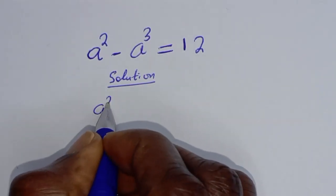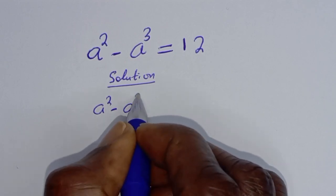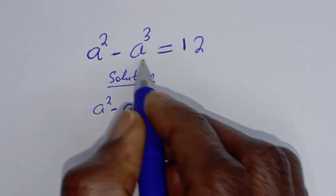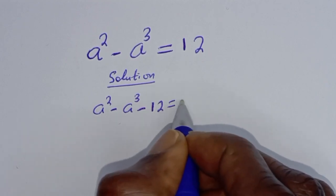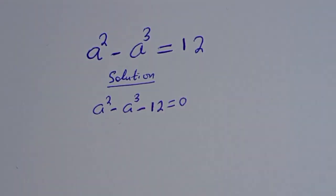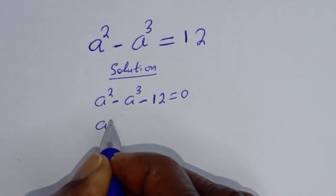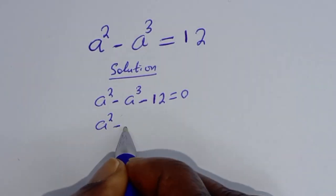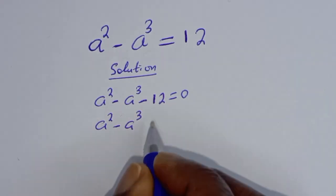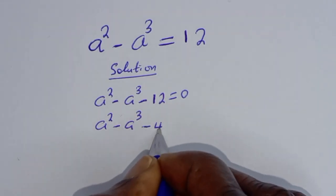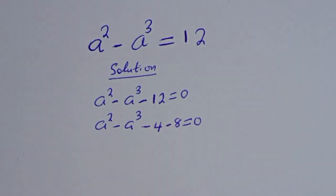Taking the right-hand side across, a squared minus a raised to power 3 minus 12 is equal to 0.